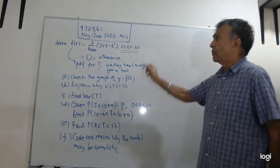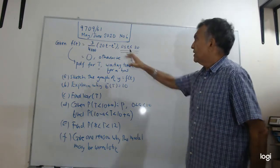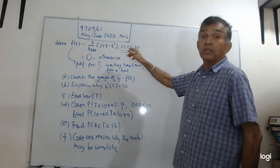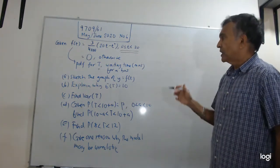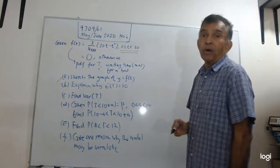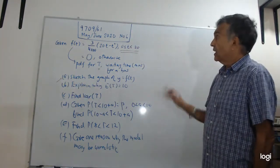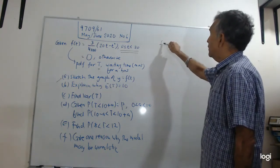So this PDF is given here, f(T) equals 3 over 4000, 20T minus T squared. And also keep an eye on the values of T for which this PDF is valid, T between 0 and 20. That's what we call it. When we study functions, we call it the domain. So this function is valid for values of T between 0 and 20.